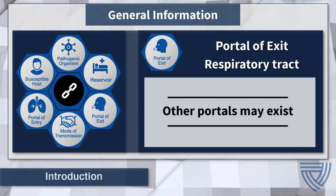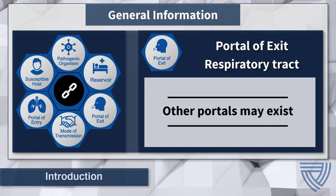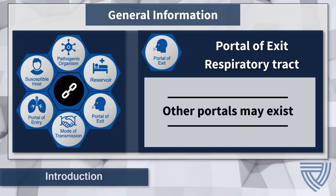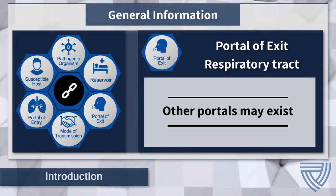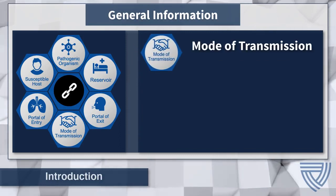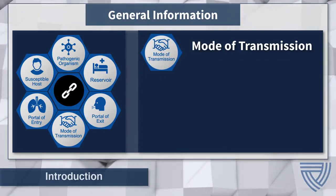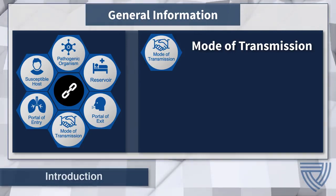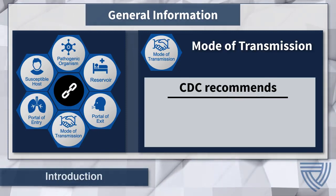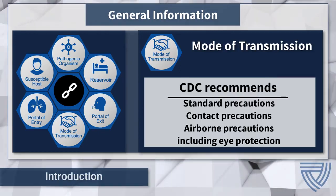There may be other portals of exit, such as the gastrointestinal tract via stool, but for now we will focus on the respiratory system. Having a patient wear a mask to block respiratory secretions is one way to break the chain of infection at the portal of exit. The mode of transmission is the means in which the pathogen travels to a new host. The mode of transmission is contact, droplet, and airborne. For COVID-19, the CDC recommends standard, contact, and airborne precautions with eye protection.